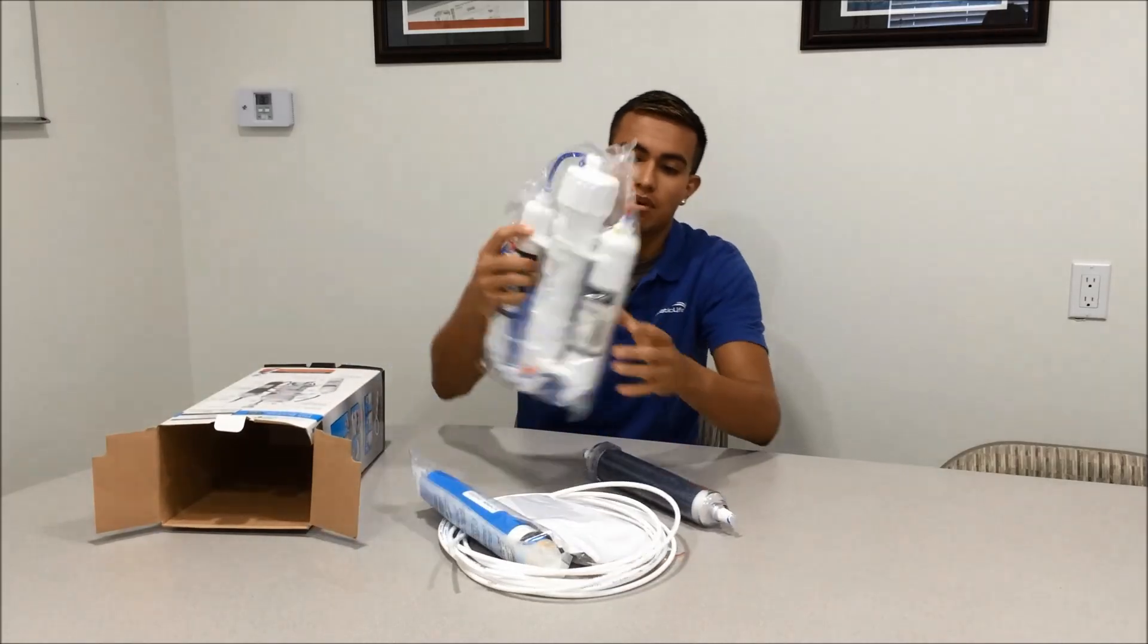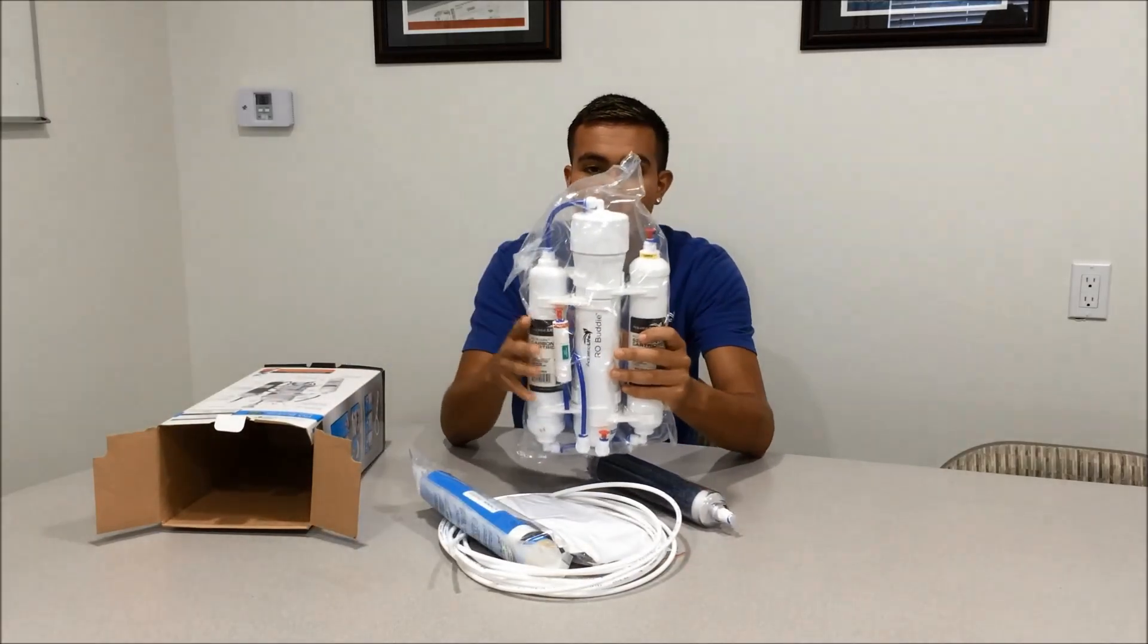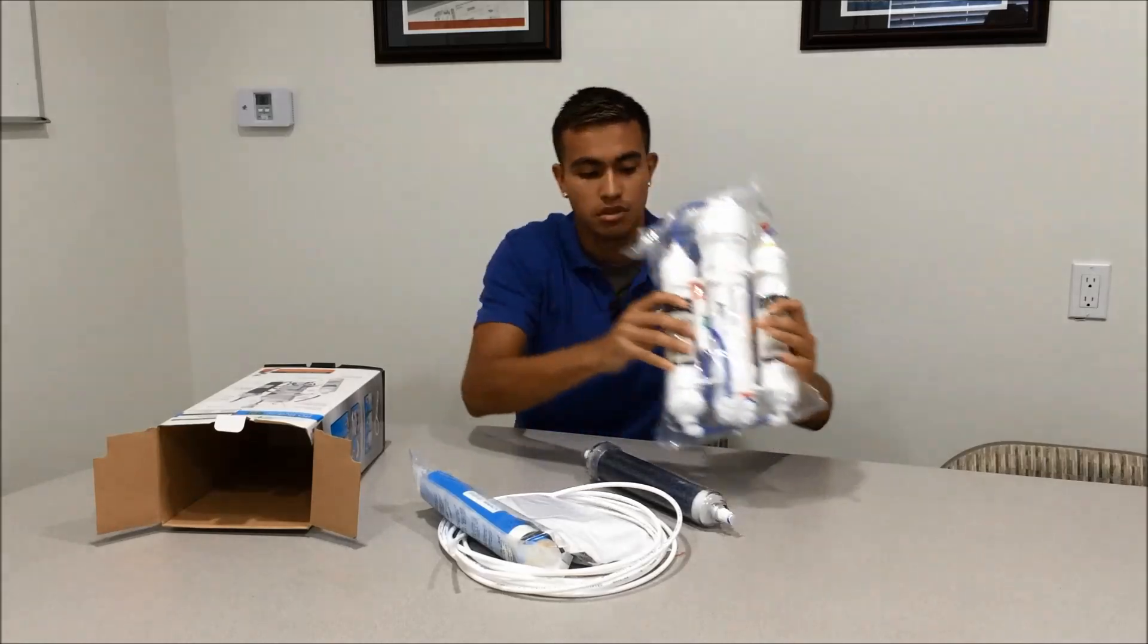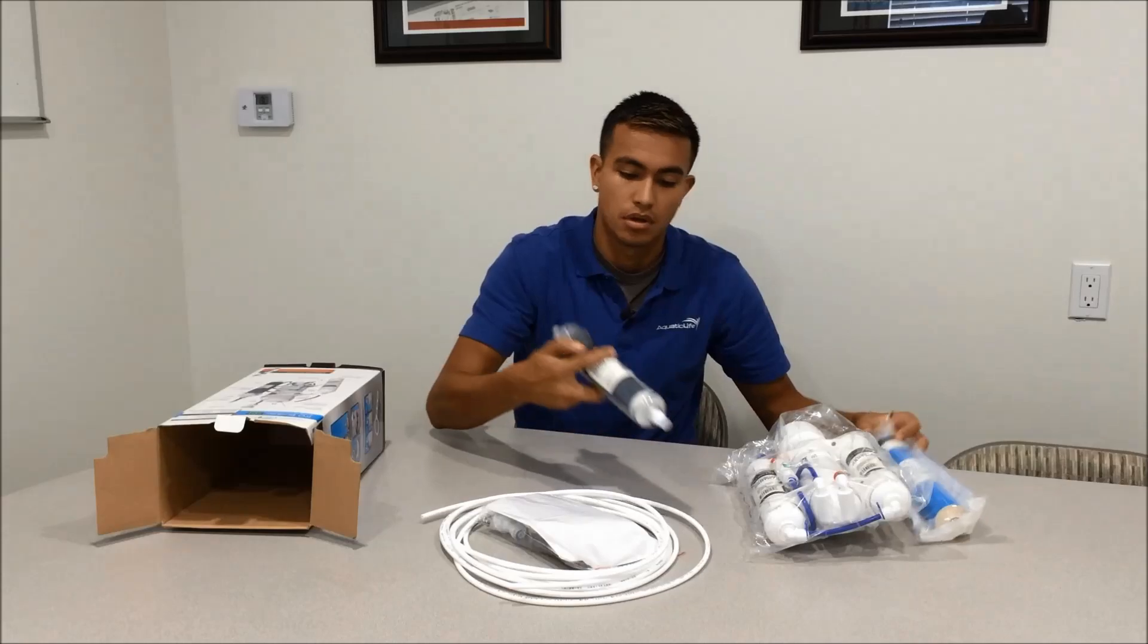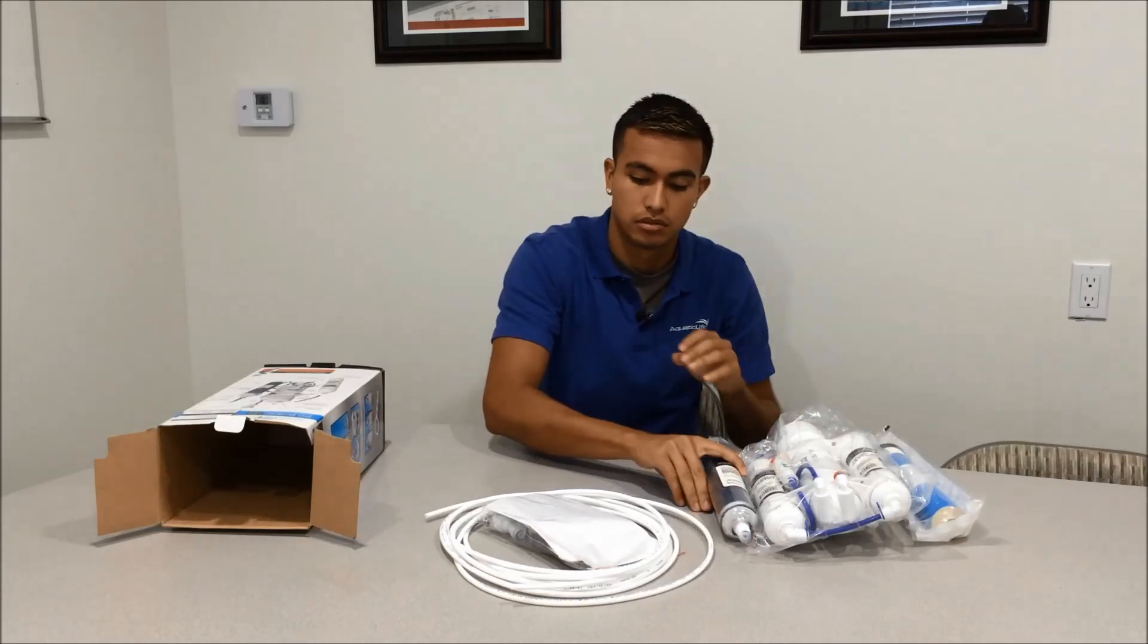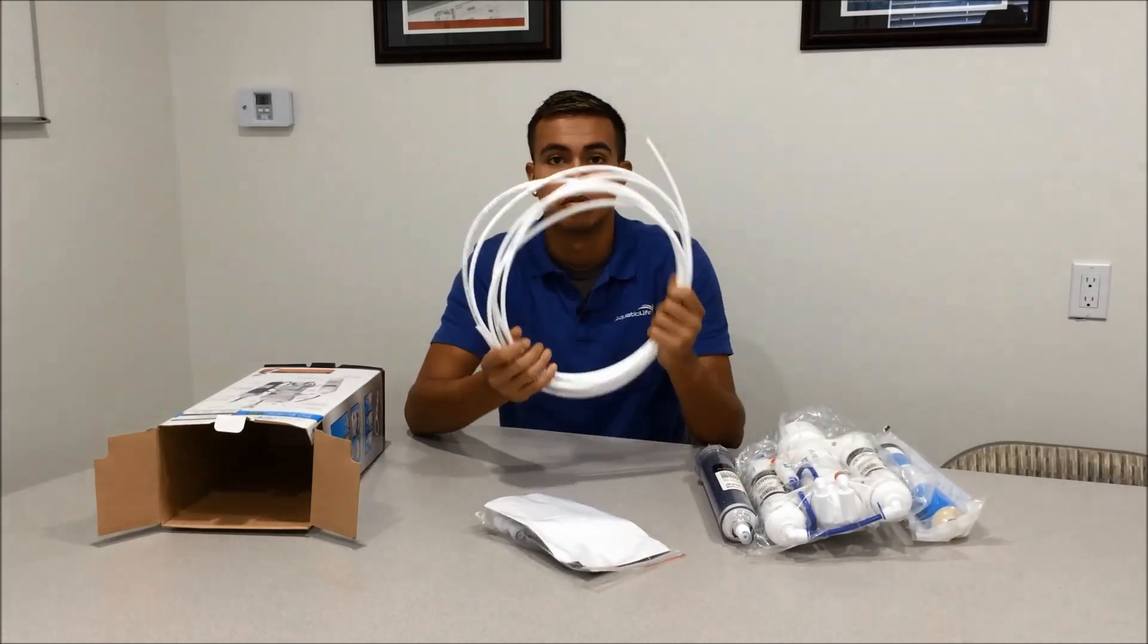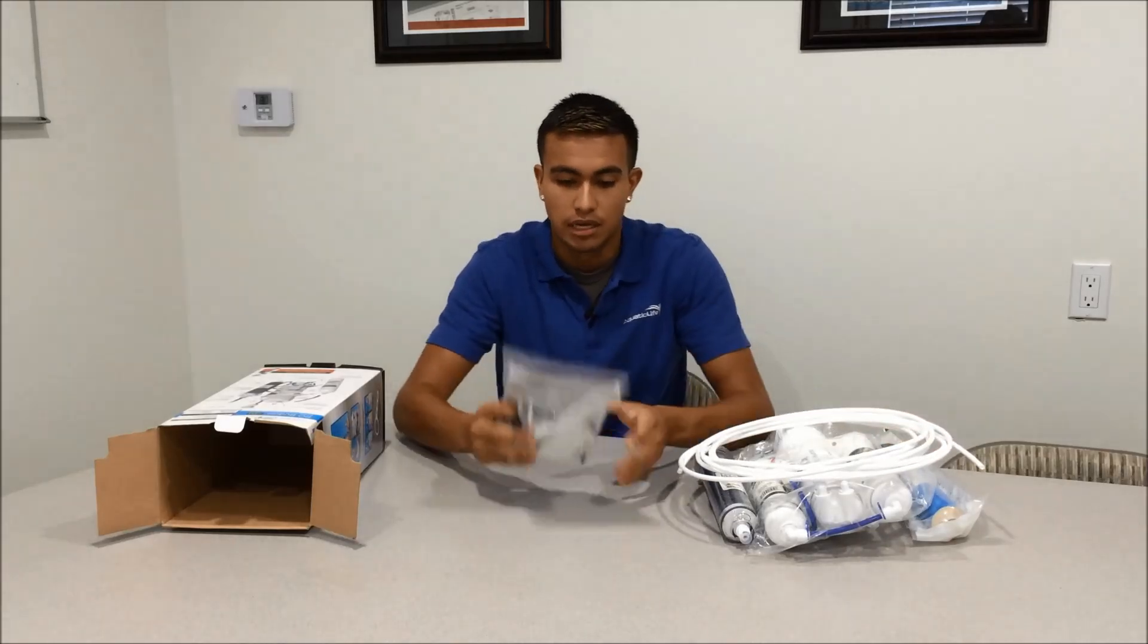The first thing we'll notice is we have our RO Buddy. We have our sediment, our carbon, and the membrane housing here. We have our membrane, our DI cartridge, 20 feet of white tubing, and our parts pack.